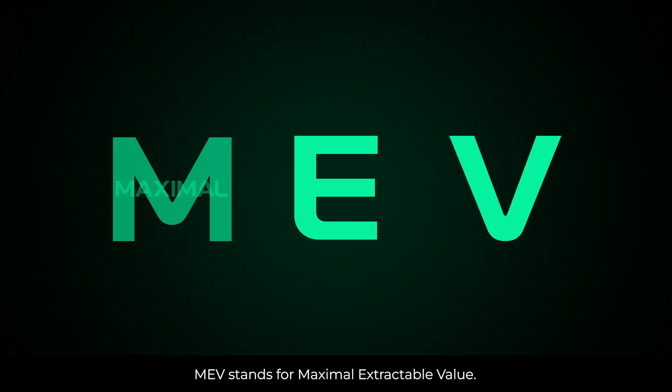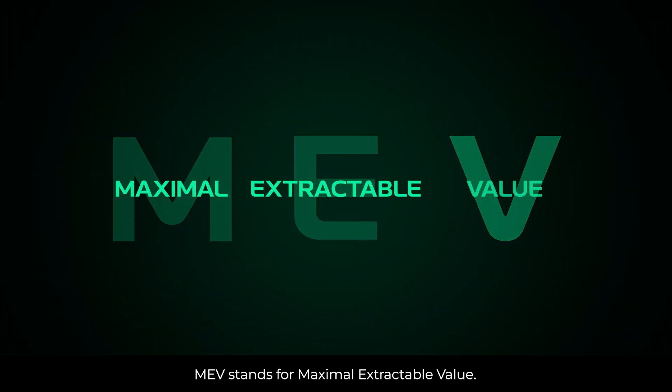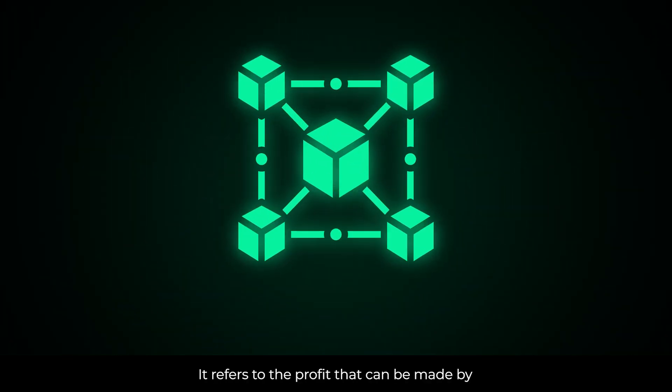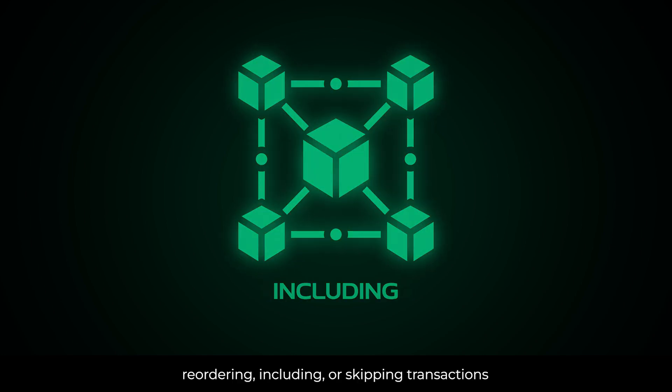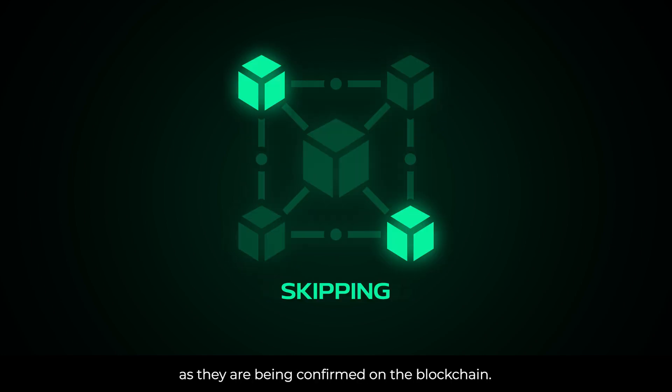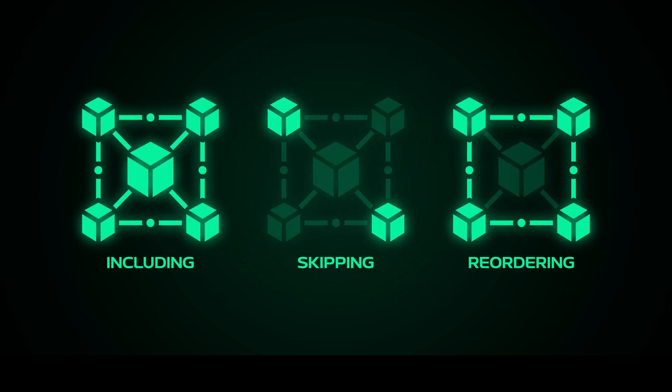MEV stands for Maximal Extractable Value. It refers to the profit that can be made by reordering, including, or skipping transactions as they are being confirmed on the blockchain.